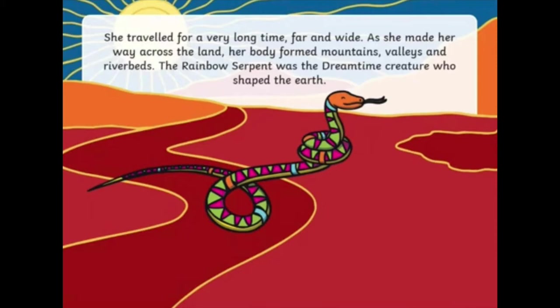She traveled for a very long time, far and wide. As she made her way across the land, her body formed mountains, valleys, and riverbeds. The rainbow serpent was the dreamtime creature who shaped the earth.